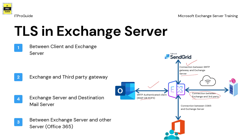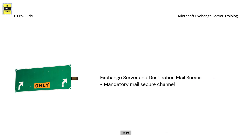When it comes to client and Exchange communication, Exchange and third-party gateways, or Exchange over Office 365, we have more control on both sides and can decide what kind of configuration is needed. But when it comes to Exchange Server and recipient mail servers, we don't have any control on recipient mail servers like Gmail, Yahoo, or any other mail server. These destination mail servers may use different security mechanisms in addition to SMTP. In this video we focus on the Exchange Server and recipient mail server TLS configuration.